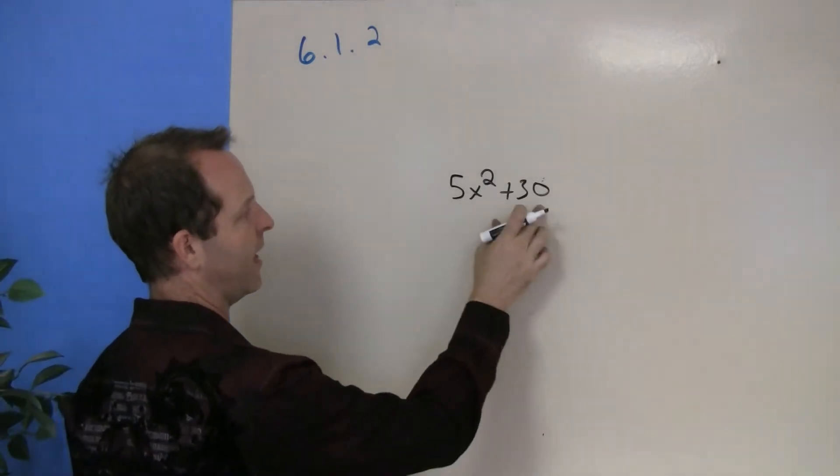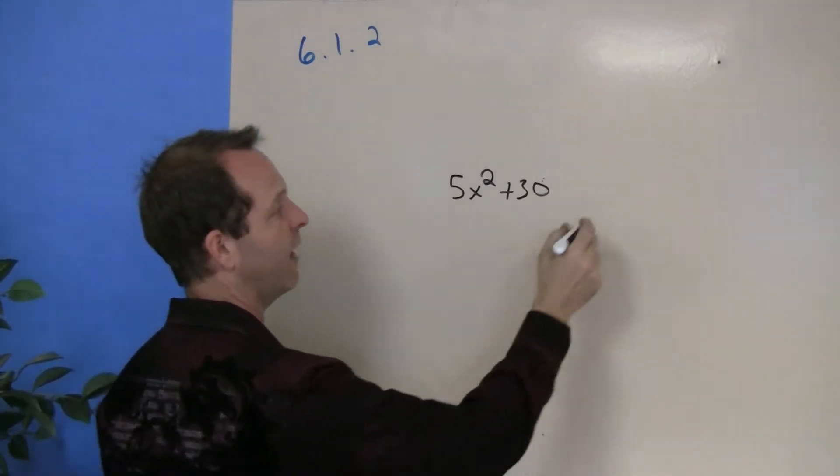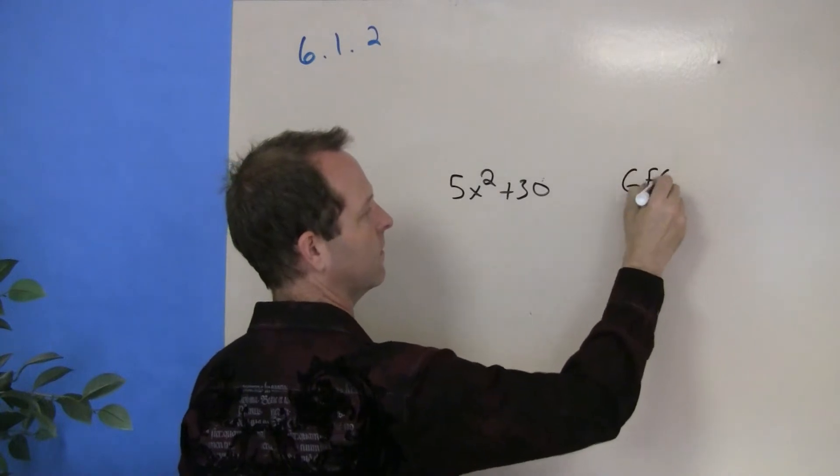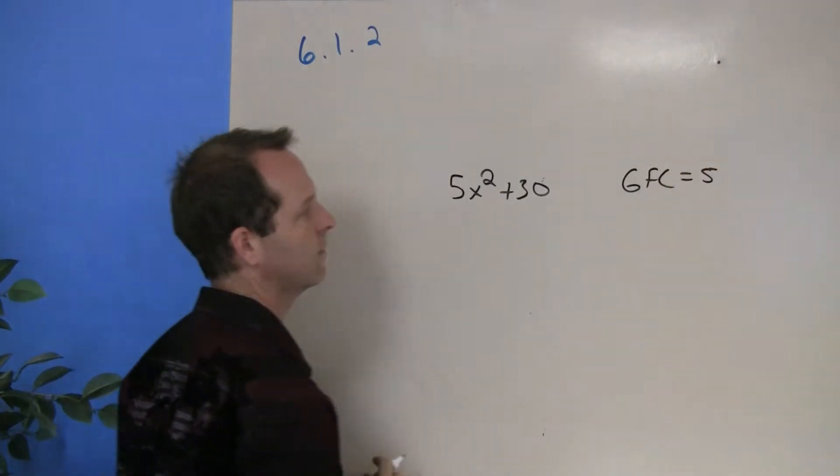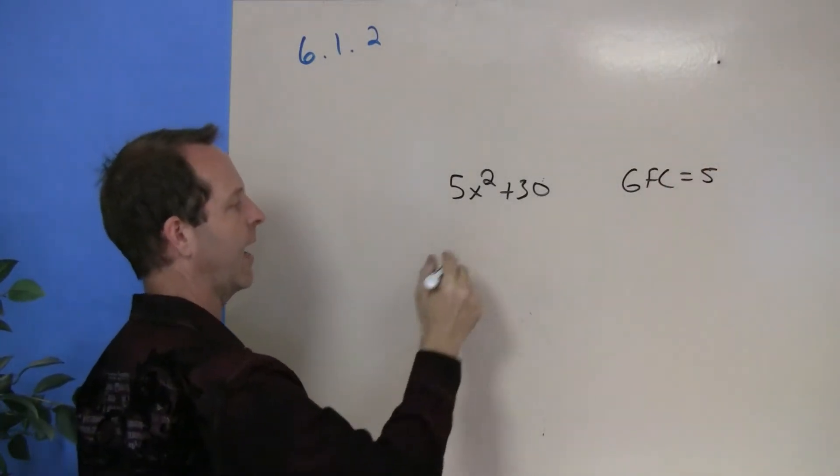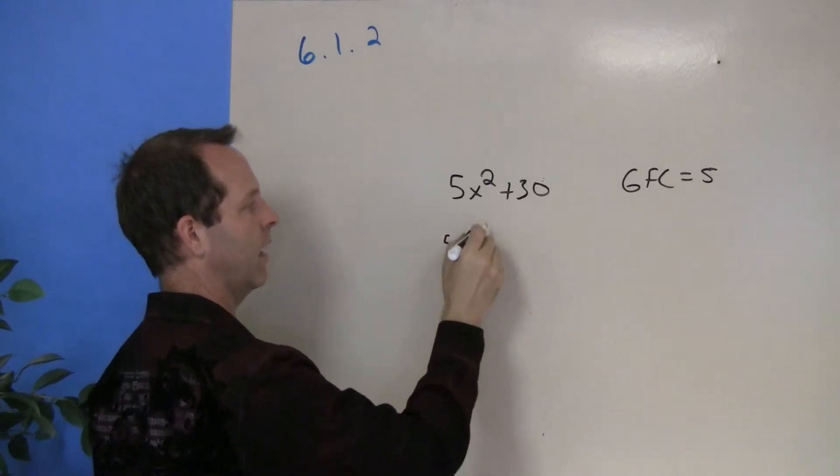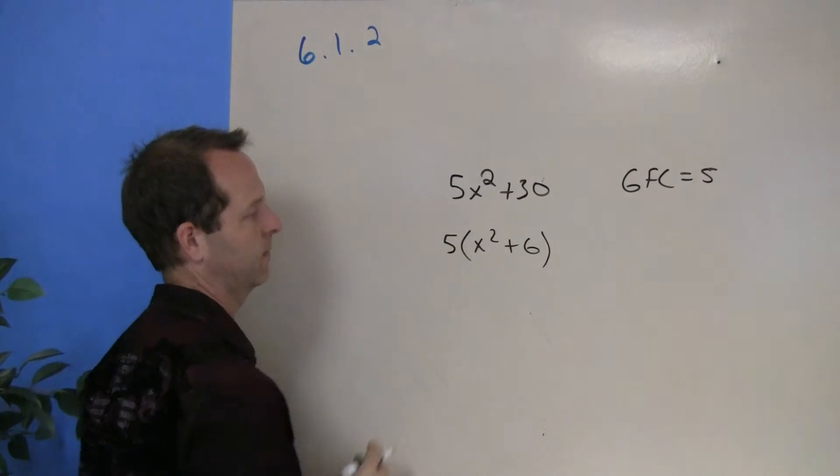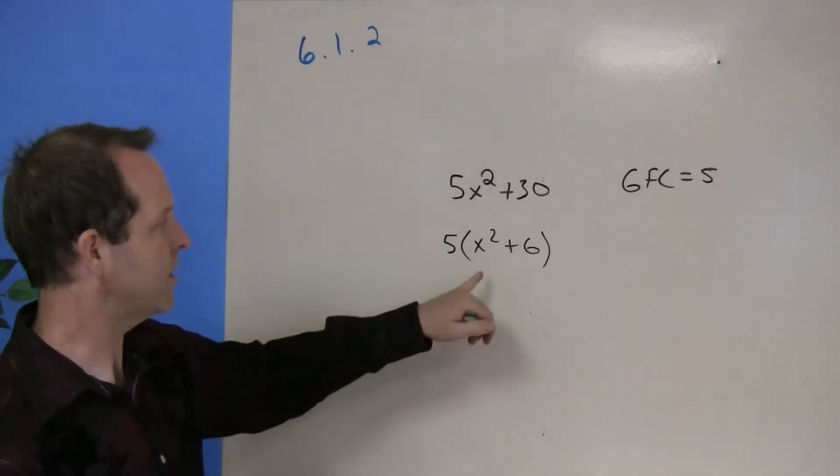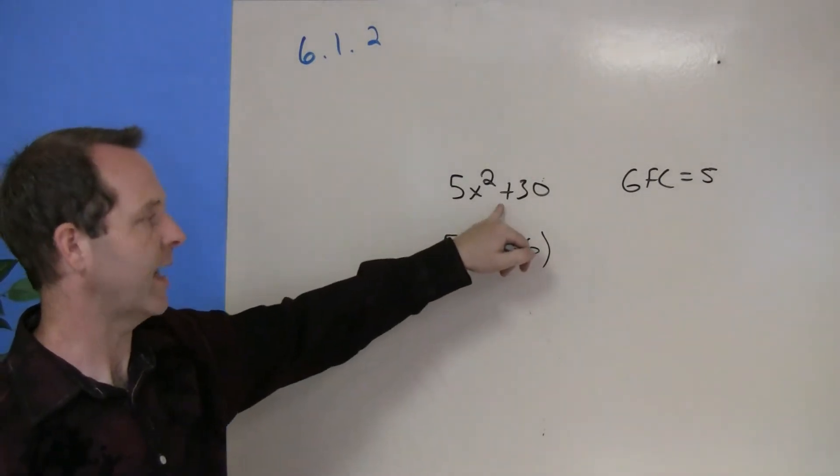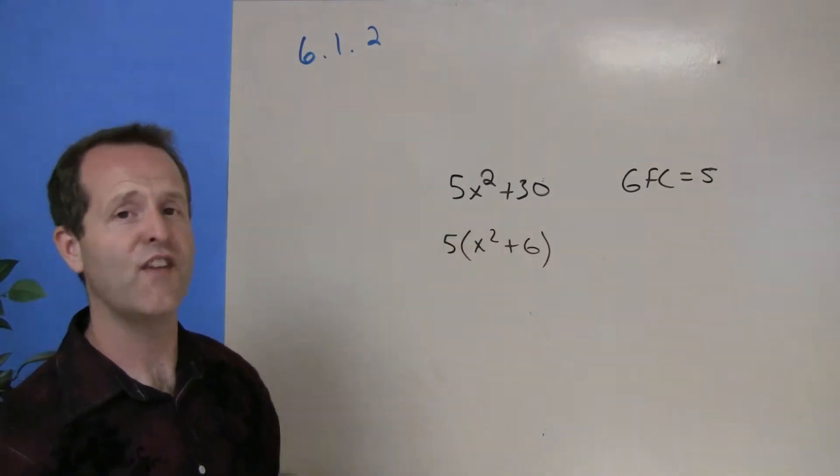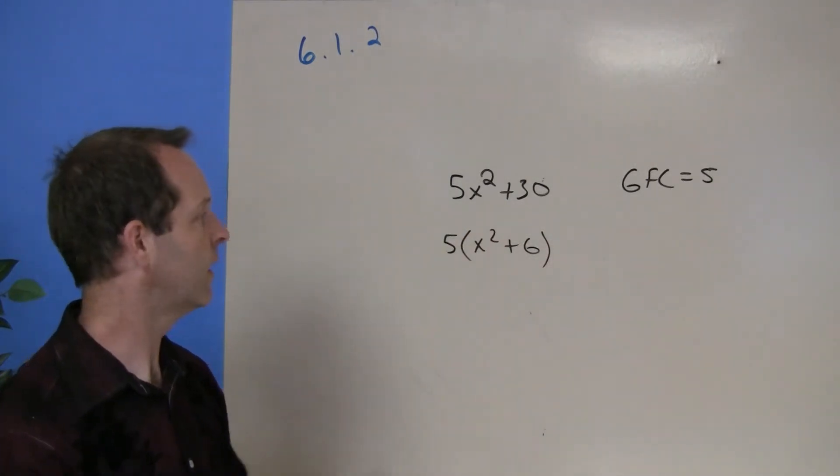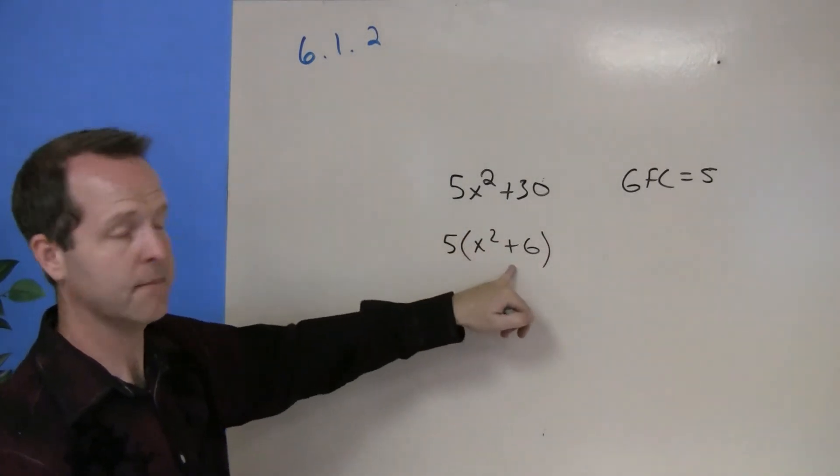The greatest common factor between these two terms is a 5. So I can rewrite this then as 5 times (x² + 6). And that's useful sometimes when we're looking at an idea. We call this factoring. Let's factor out the greatest term, so I'm left with 5 times what is remaining.